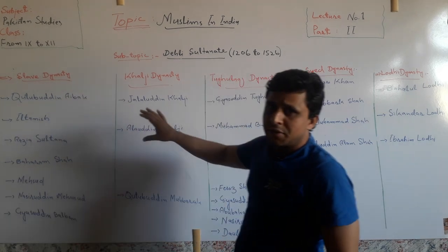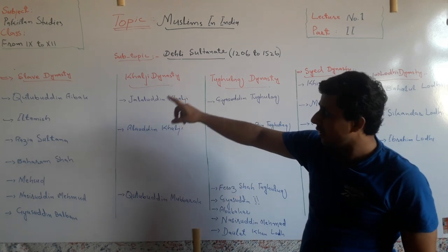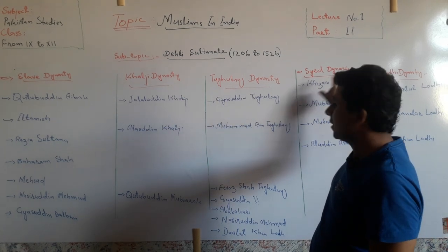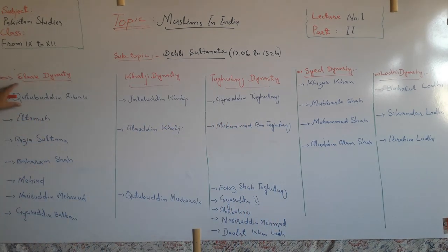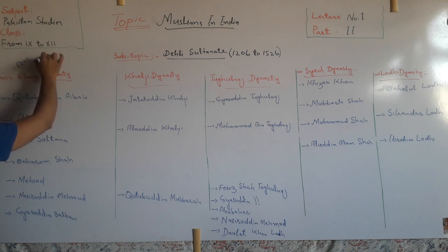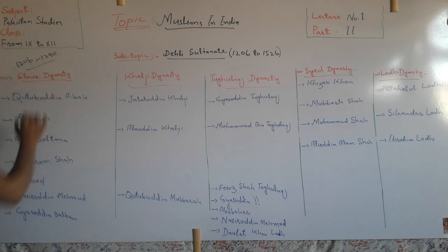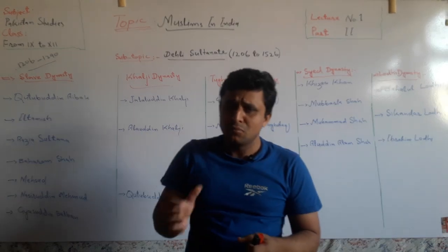Dear friends, in the Delhi Sultanate there are five dynasties: Slave, Khilji, Tughlaq, Sayyad, and Lodhi dynasty. Starting with the Slave dynasty — the Slave dynasty was founded in 1206. It was founded by Qutbuddin Aibak, who was a governor of Muhammad Gori.